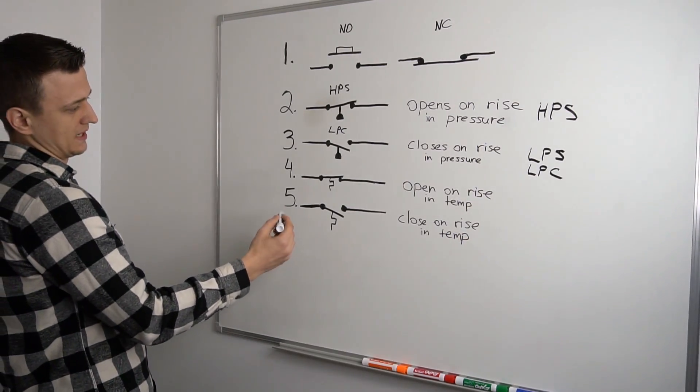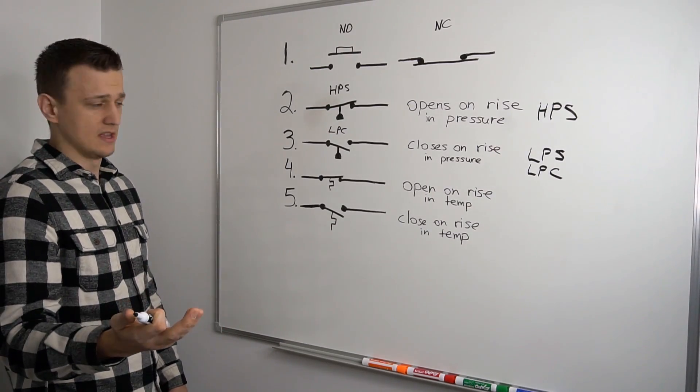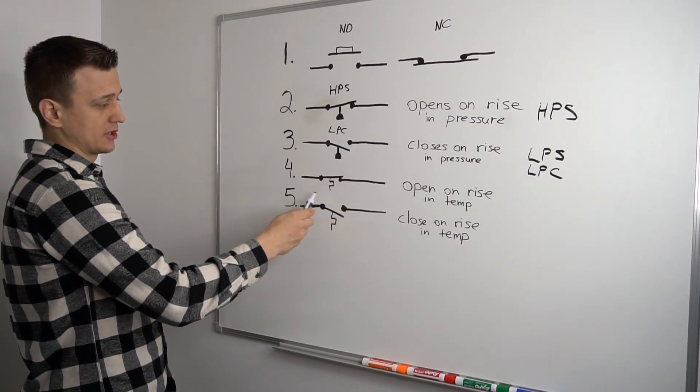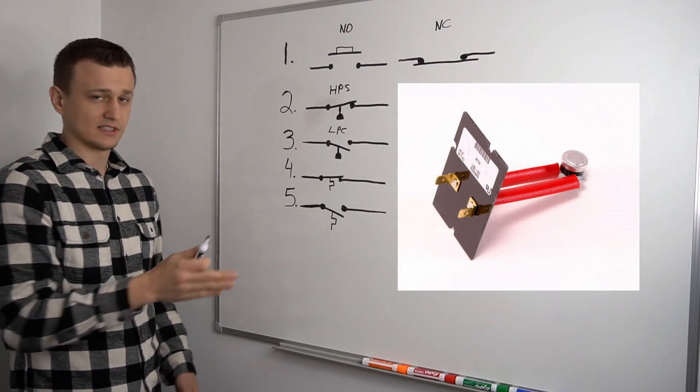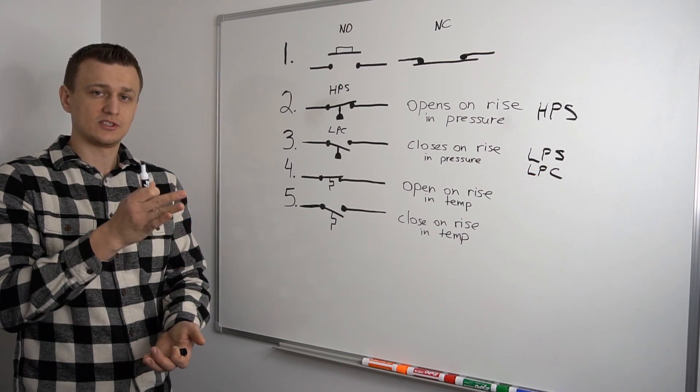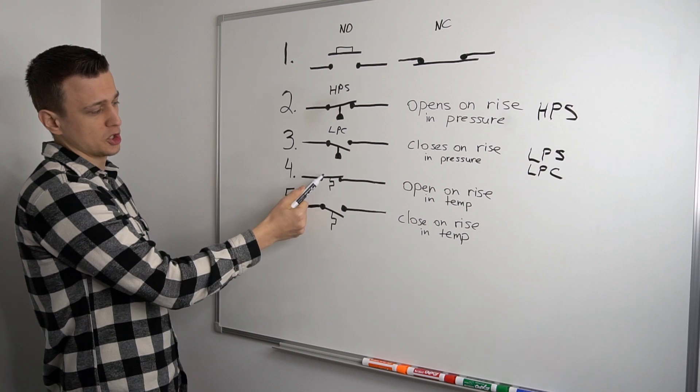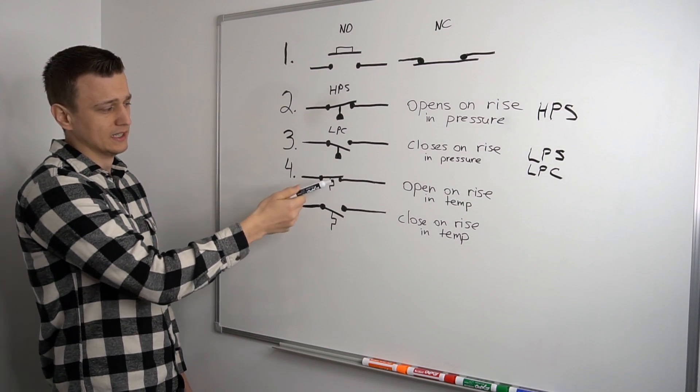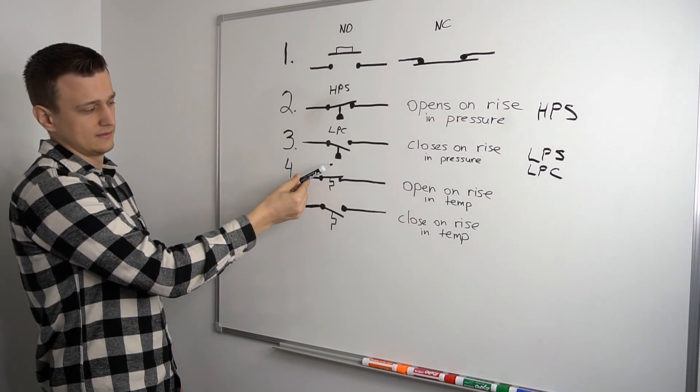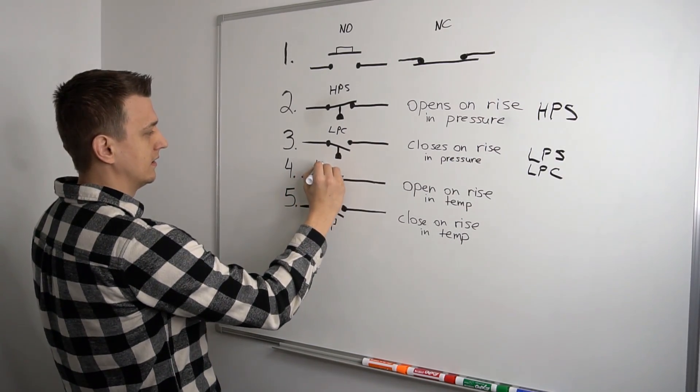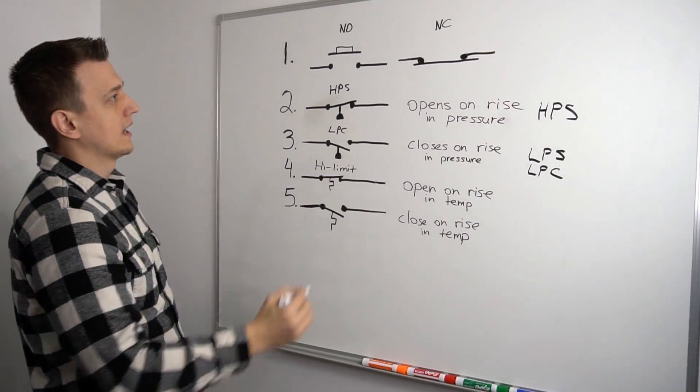And two examples of this would be, for example, either a flame rollout switch or a high limit switch on a furnace. So this is a normally closed switch on a furnace. Let's say the high limit, it's a normally closed switch. But if for some reason, let's say the filter hasn't been replaced for ages. The furnace starts to overheat. It gets too hot. The temperature goes up higher than it should, whatever the rating is, like 160, 170. That goes up and interrupts the circuit if the furnace is getting too hot. And actually, let's write that down. So this would be the high limit, for example.